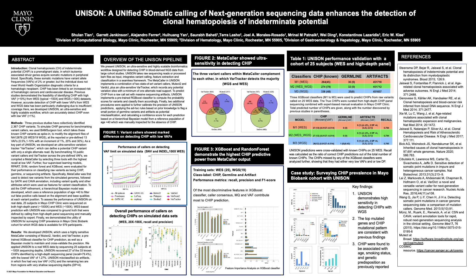The second step was to use real-life data to assess the performance of this workflow. We sequenced a cohort of 25 subjects from the Mayo CHIP clinic, for whom ground truth was already available — defined by experts through sequencing a high-depth panel. This workflow demonstrated roughly 80% recall, and for each subject we narrowed down a very large number of raw variant calls to roughly 10 CHIP candidates per subject.